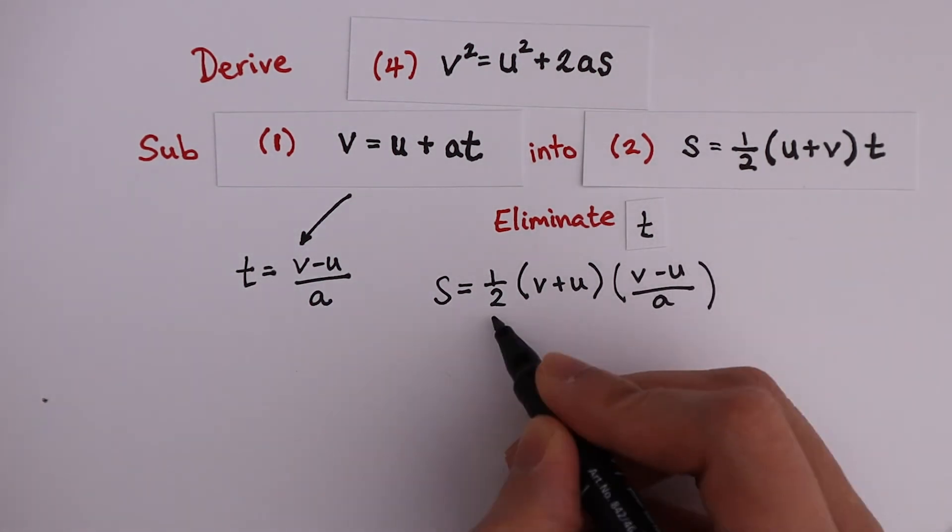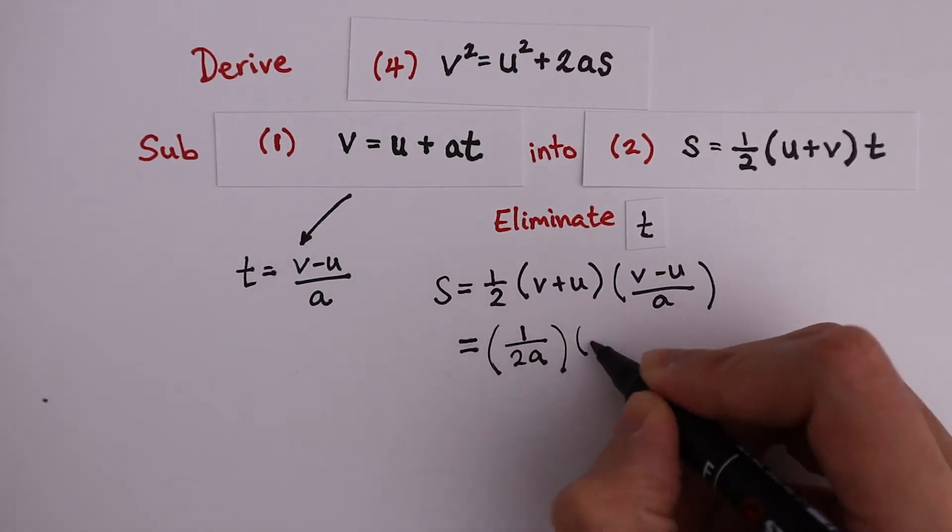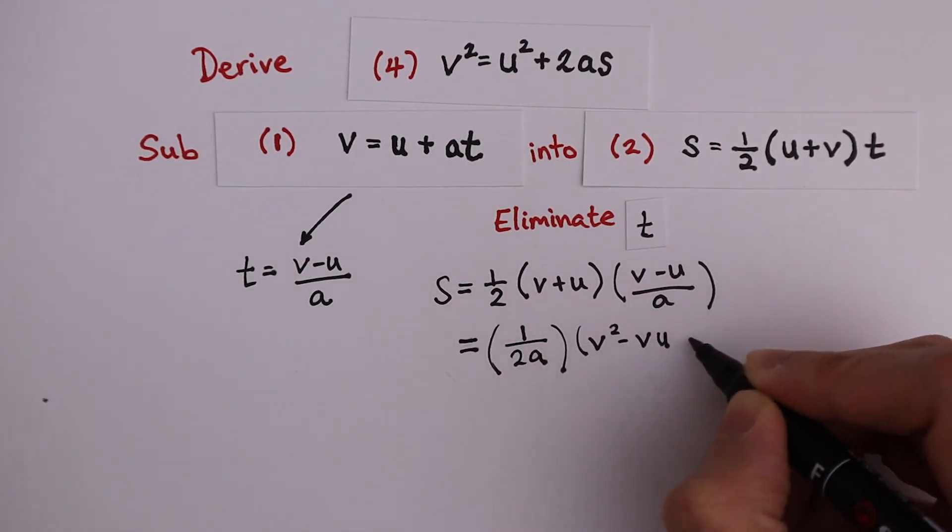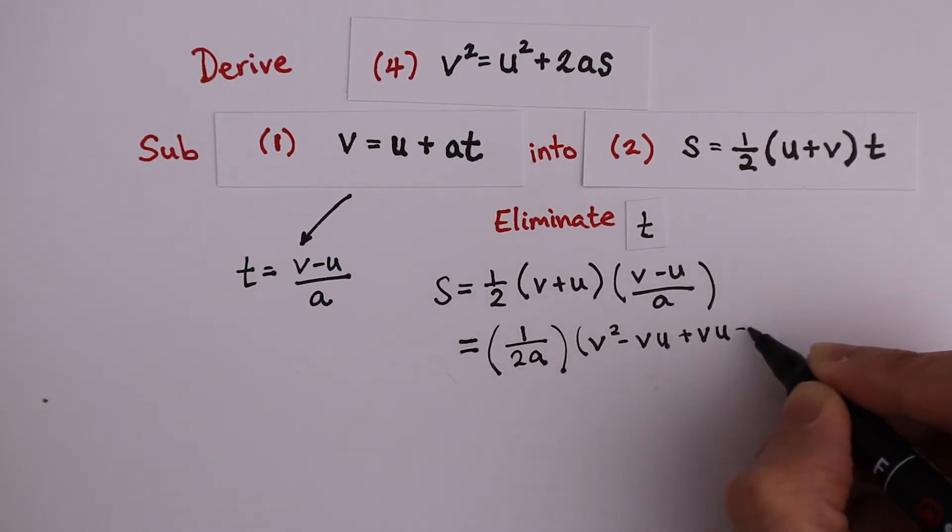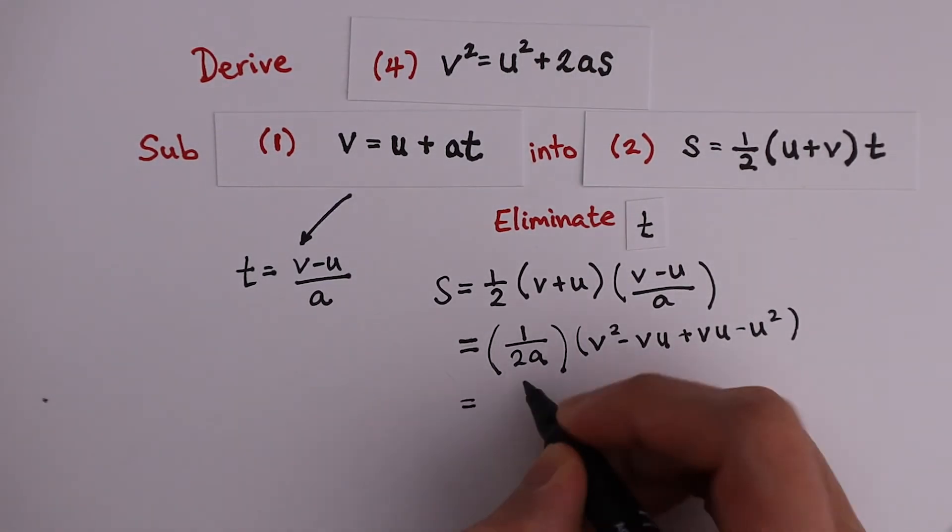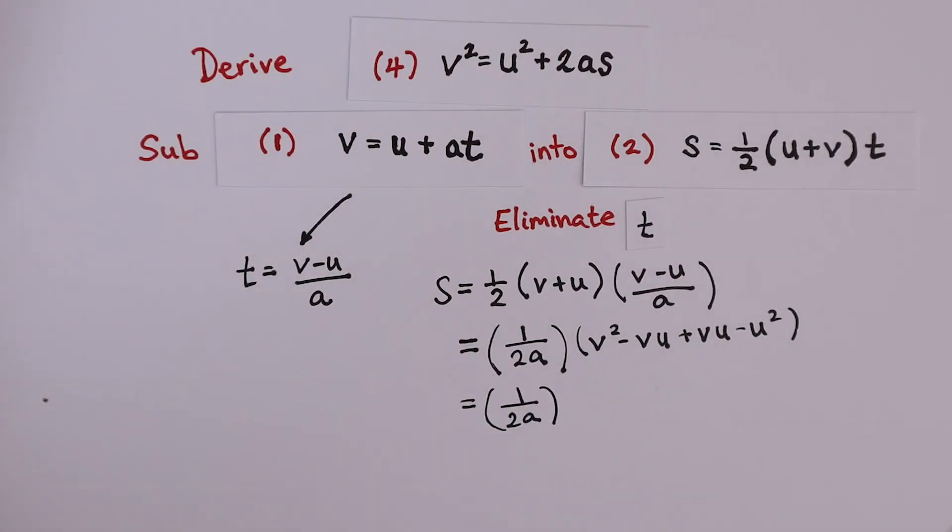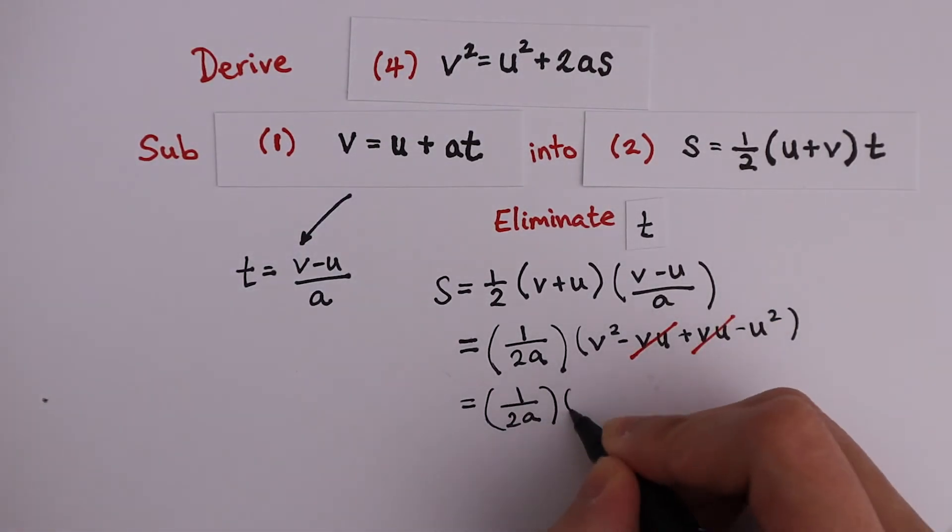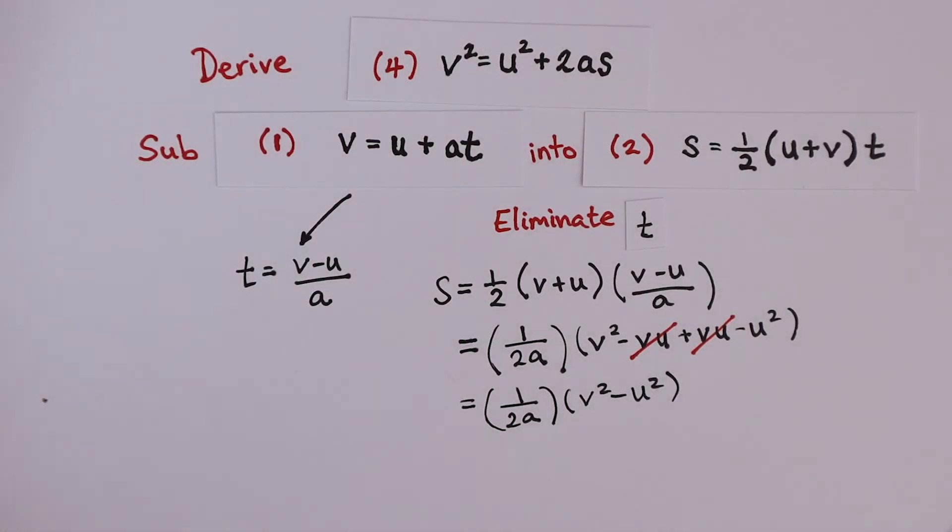Bringing a outside of the brackets, we get 1 divided by 2a, v squared minus vu plus vu minus u squared. That becomes 1 divided by 2a. These two cancel out so that we are left with v squared minus u squared.